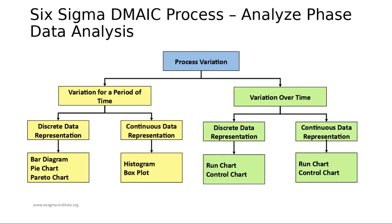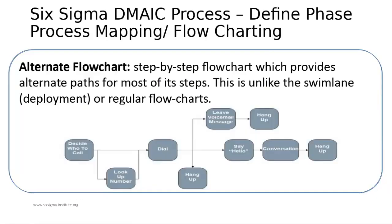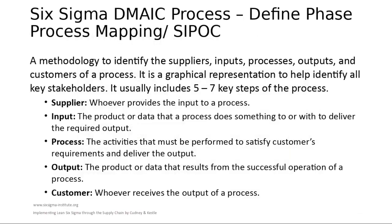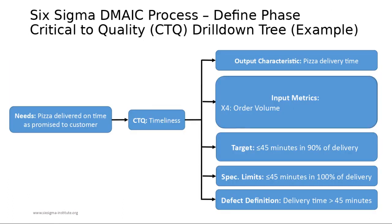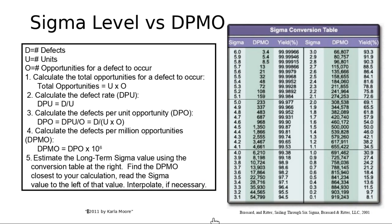After calculating the DPMO, you can track it in the sigma table to see what sigma level you are performing at and know the percentage yield of the process. That's all for now — we'll see you in the next video.